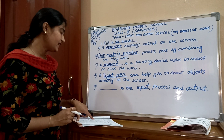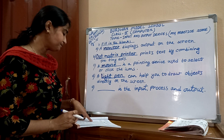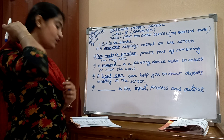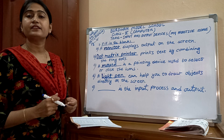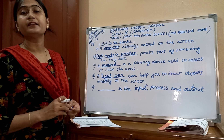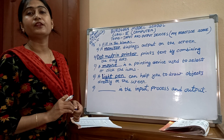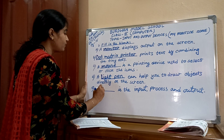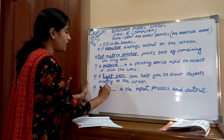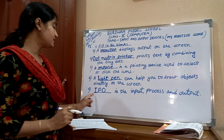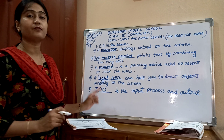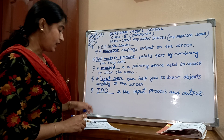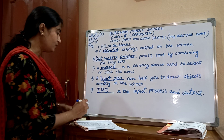Now number E. A dash is the input, process and output — which is IPO. IPO cycle. I for input, P for process, O for output. You all please write the short form always in capital letters: IPO.